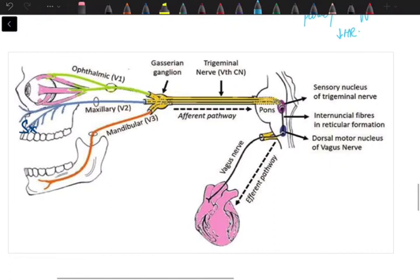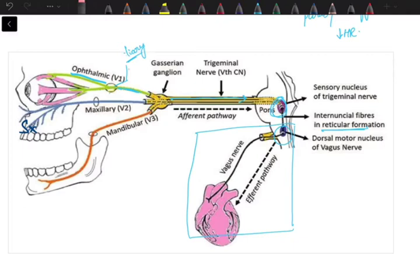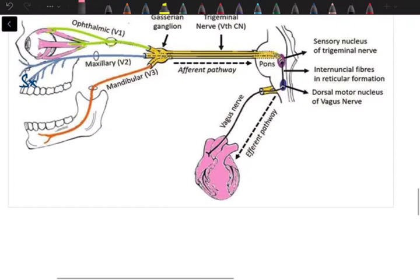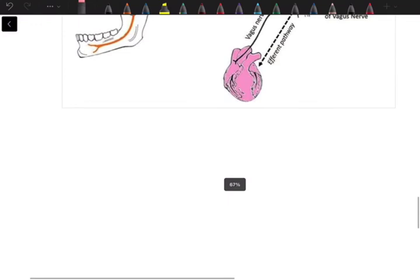I'll give you a pictorial representation. This image is from Google. You can see the eye, ophthalmic division connected to ciliary ganglion, the ophthalmic division of cranial nerve 5, and Gasserian ganglion. Information is carried to the trigeminal nucleus. Between the trigeminal nucleus and vagus nucleus are reticular formations. From there, the efferent pathway shows effects on the heart.